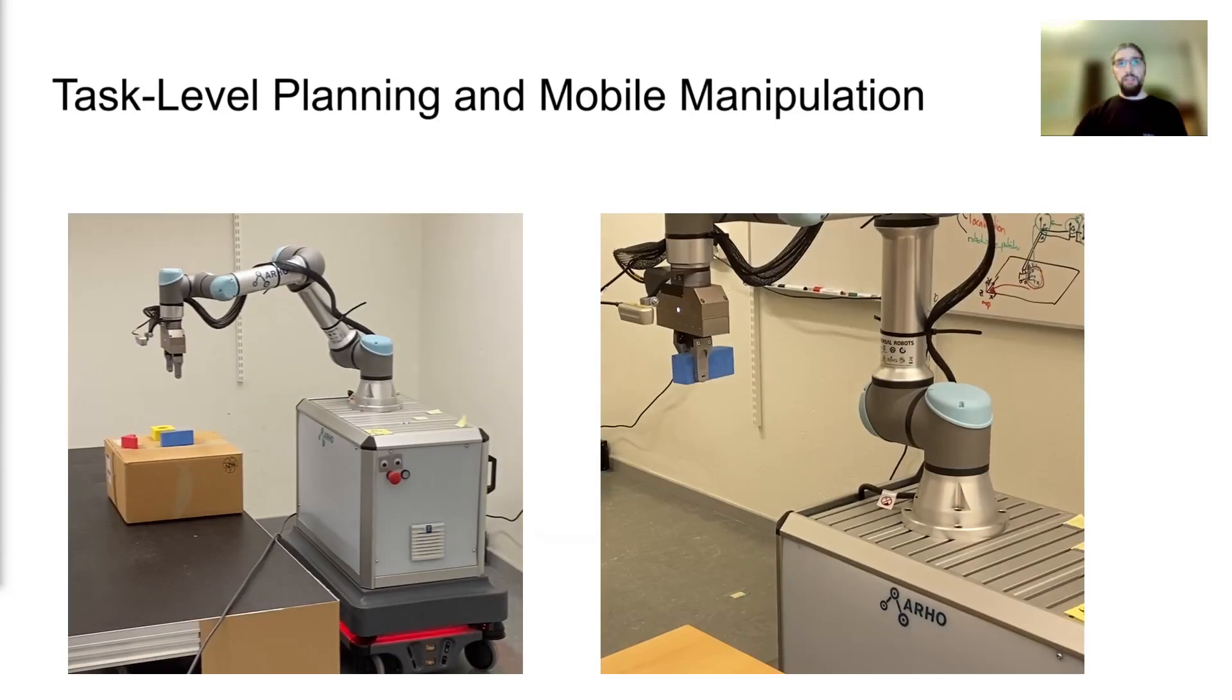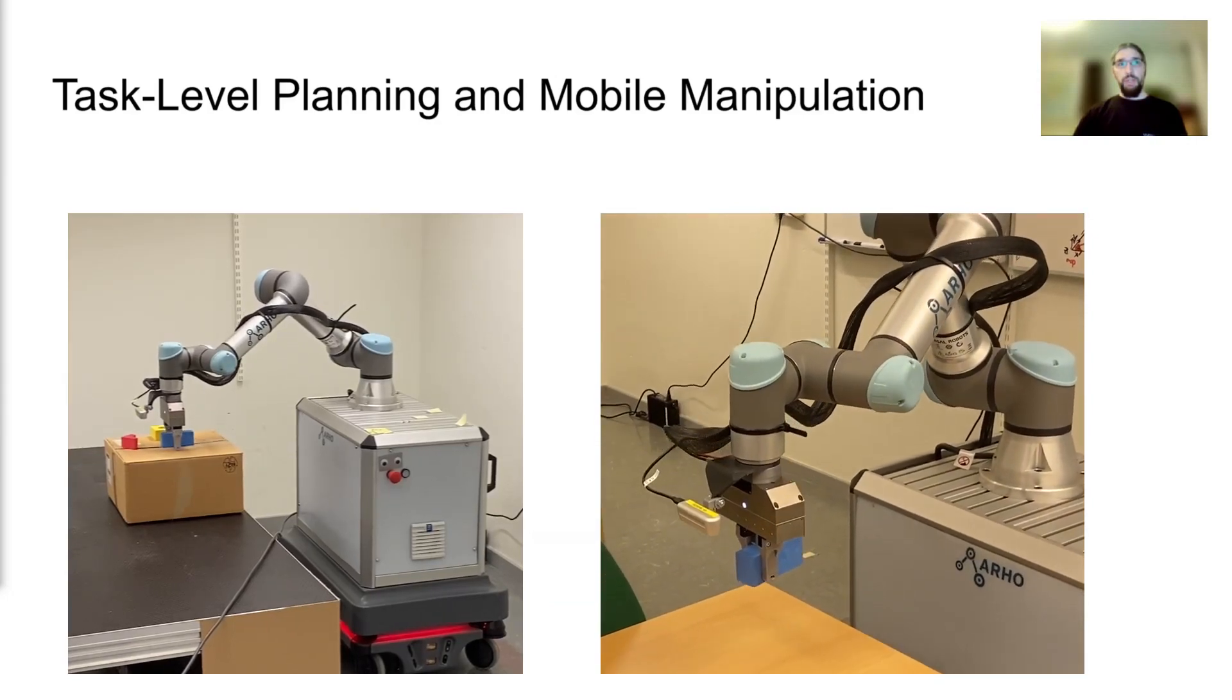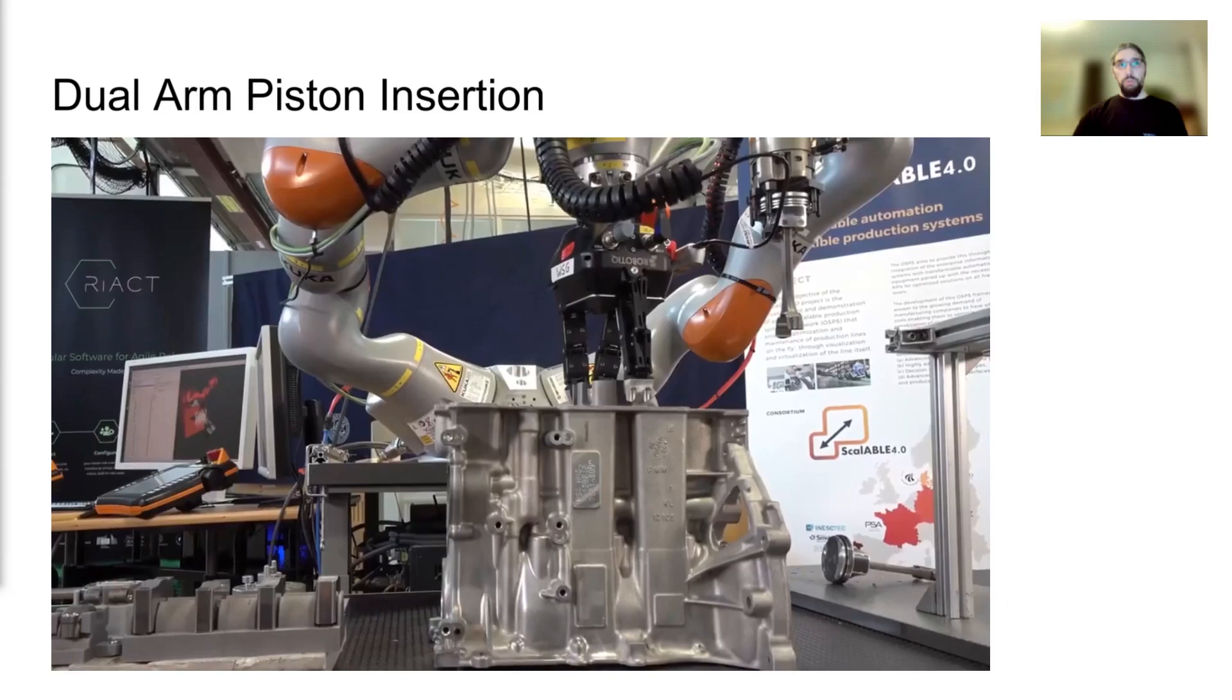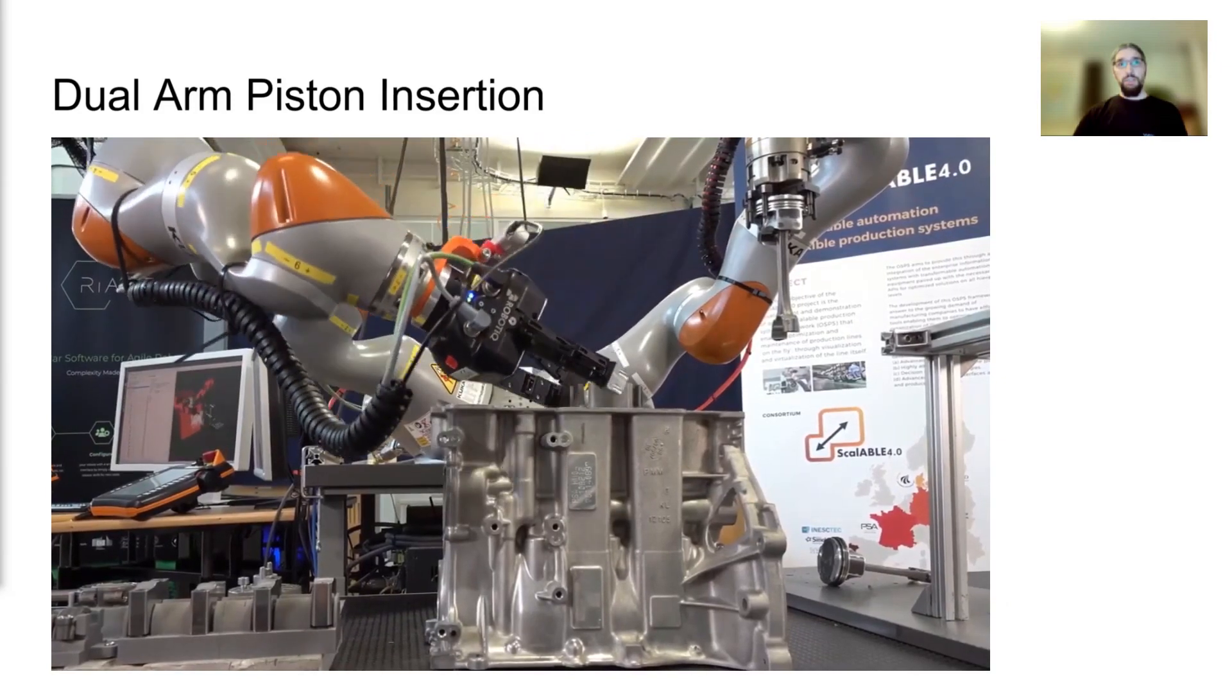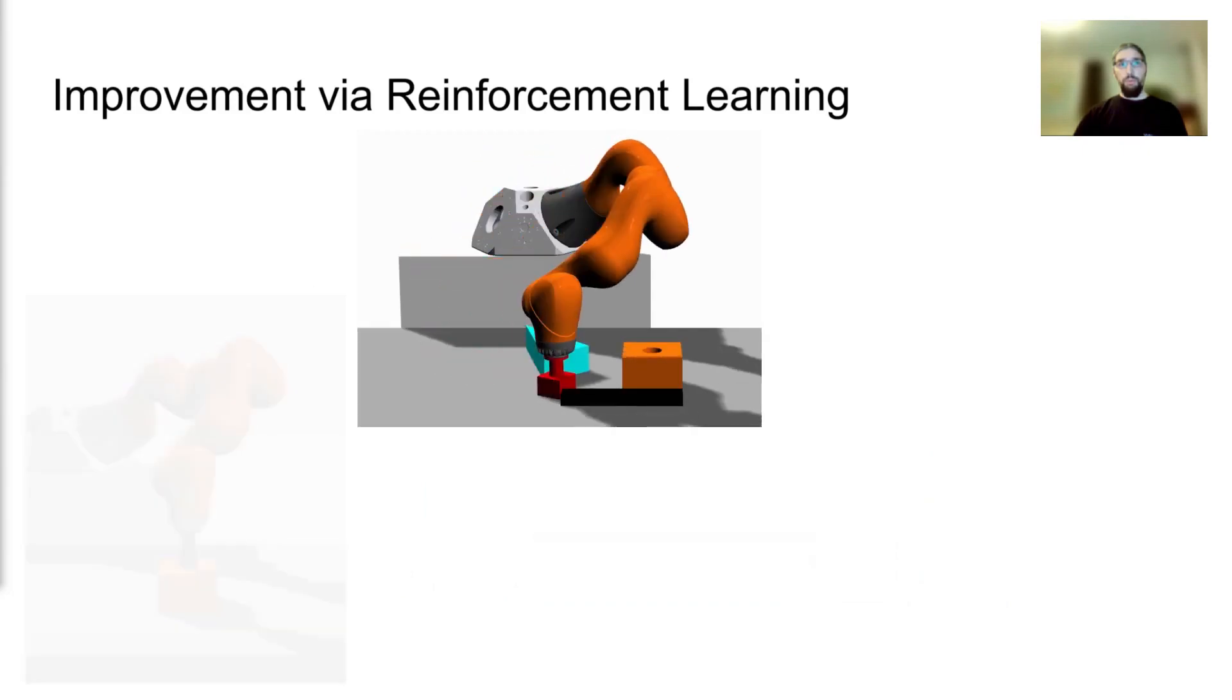Skyros 2 is used in a wide variety of relevant challenges in robotics. This includes mobile manipulation with task level planning, a dual-arm piston insertion that includes kinesthetic teaching and vision integration, as well as improving the performance of executions with reinforcement learning.